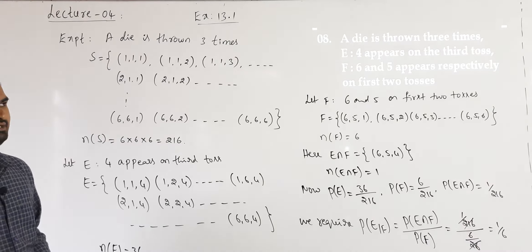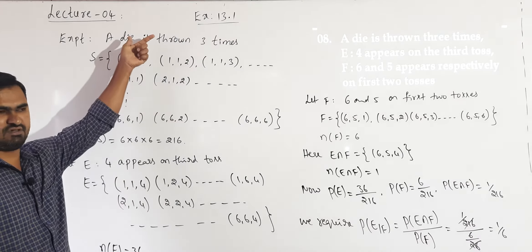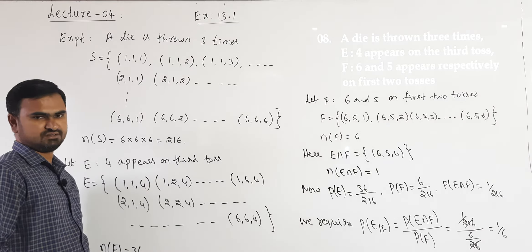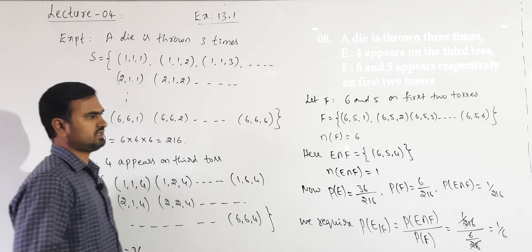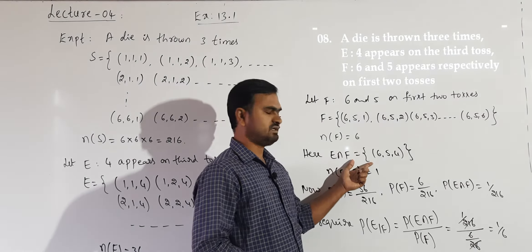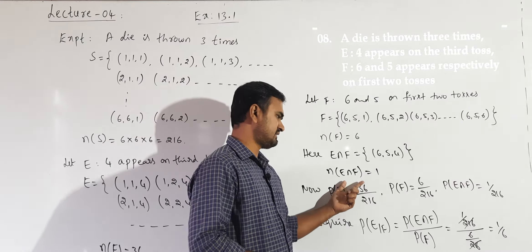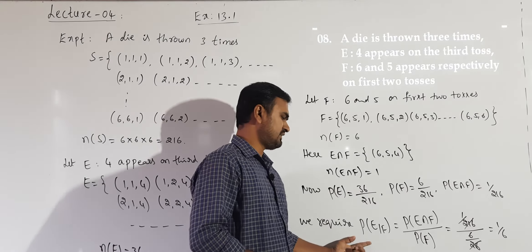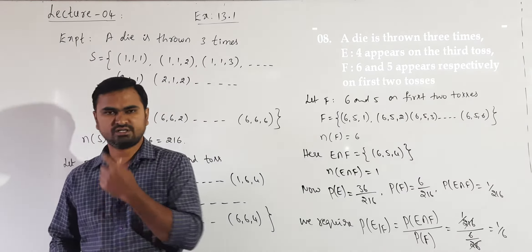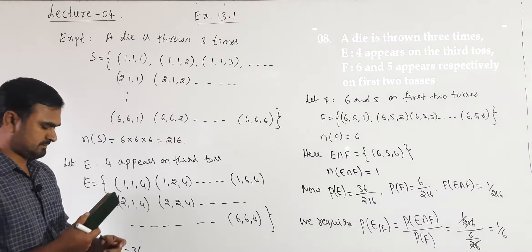In summary: first write the sample space for the given experiment, write the two events, find the elements of each event, find the intersection, write the corresponding probabilities, then find the conditional probability P(E|F).